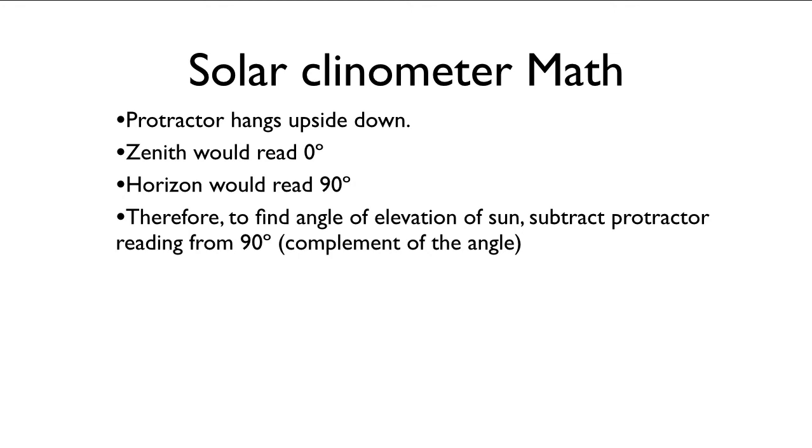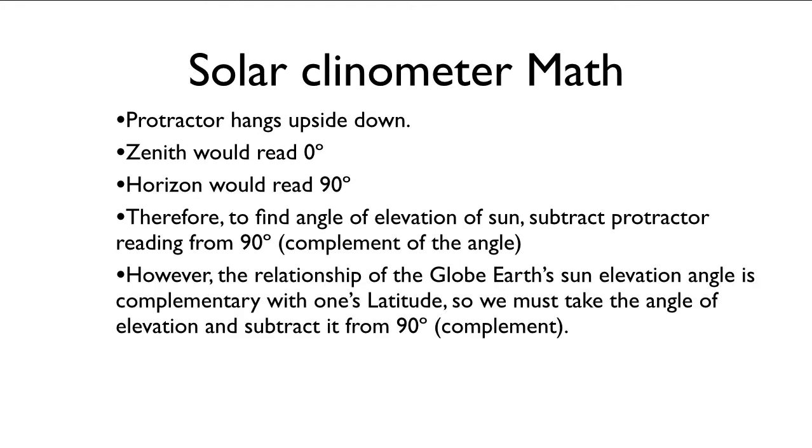So to find the angle of elevation, you subtract your protractor reading from 90. This means it's the complement of the angle. But the relationship between the globe Earth's sun's elevation angle is complementary with one's latitude. So we have to take the angle of elevation and subtract that from 90, the complement again.